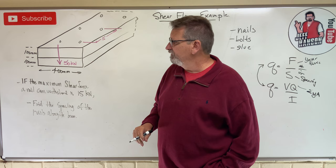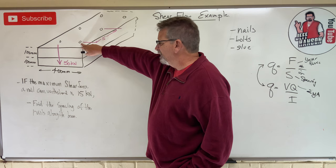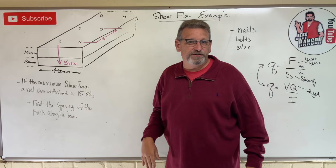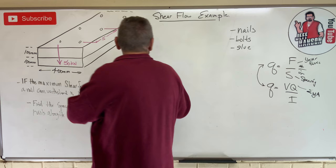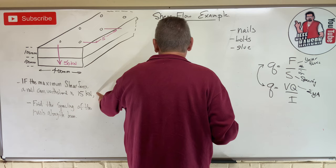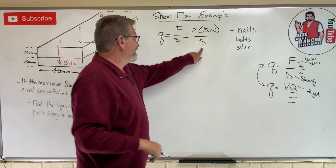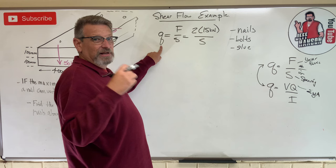Now one of the things that you have to understand on this problem is that these nails don't come one little bit at a time. They come in pairs. So if it's going to take 15 pounds to shear that nail off, then to shear that row of nails takes how much? Thirty. I'm going to have to multiply by two. So on this problem, little q is equal to F divided by S, which is the force that it takes to shear a nail is given, 15 kilonewtons, but I've got to shear two of them. So two times 15 kilonewtons, and then S, that's what we're looking for.